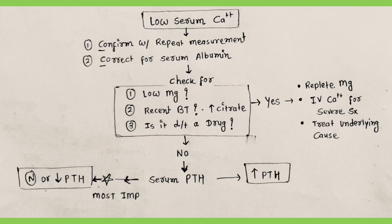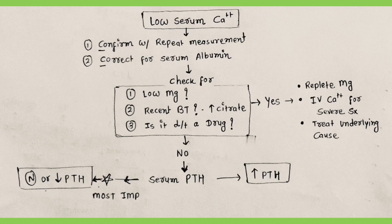Once hypoparathyroidism has been excluded, the next step is to measure a serum 25-hydroxy vitamin D level to rule out vitamin D deficiency. Common causes of vitamin D deficiency include inadequate dietary intake, inadequate sunlight exposure, and certain malabsorptive disorders. Levels of 1,25-dihydroxy vitamin D correlate with PTH activity rather than total body vitamin D stores, so they are not usually measured.